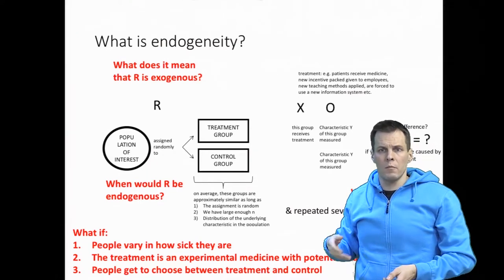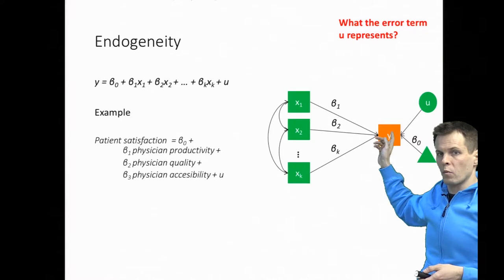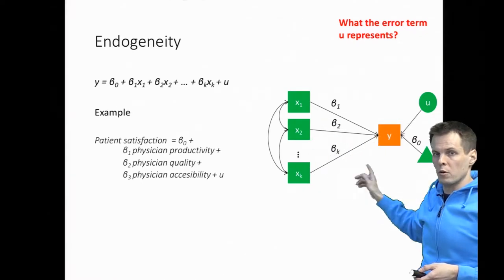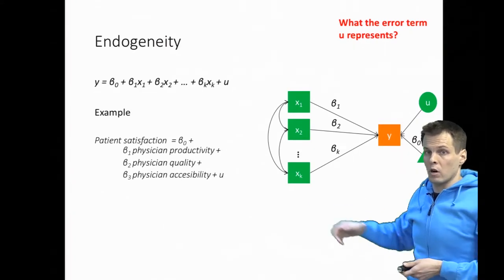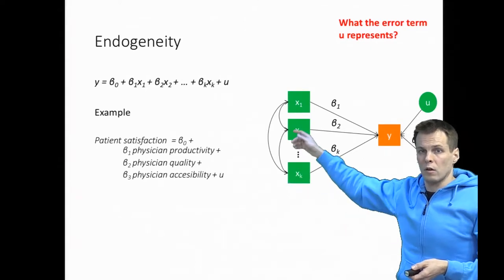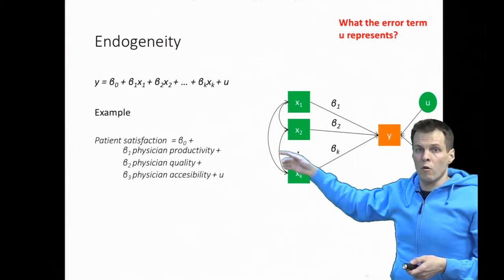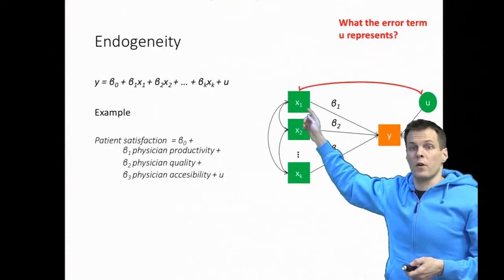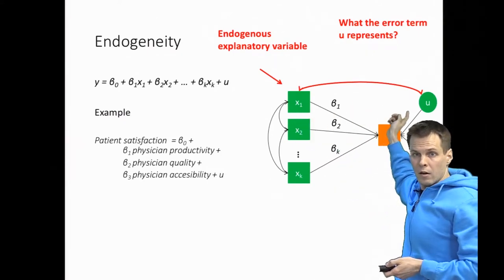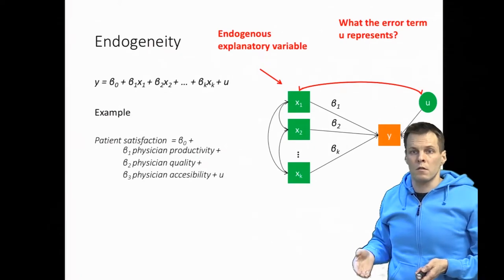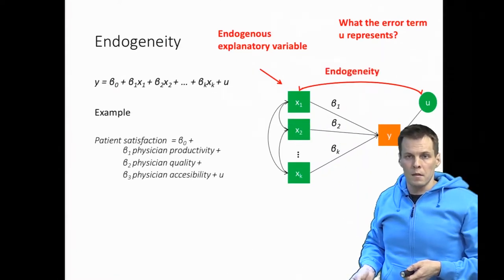Another way of understanding endogeneity in a multiple regression context is to look at the error term. Here we have a regression model in a path diagram presentation: we have y the dependent variable, three x's the independent variables, the intercept, and the error term. The error term represents all possible causes of y that are not included in the model — everything that can cause y that is not in the list of x's goes to the error term. If the error term, or any of these omitted causes, correlates with any of the included causes, then we say that x1 for example becomes an endogenous explanatory variable. A variable that is correlated with the error term is endogenous, and the general condition where one or more variables are correlated with the error term is called endogeneity.